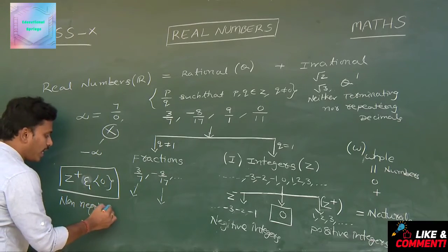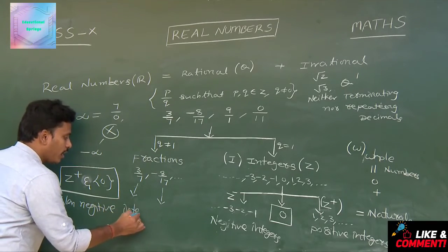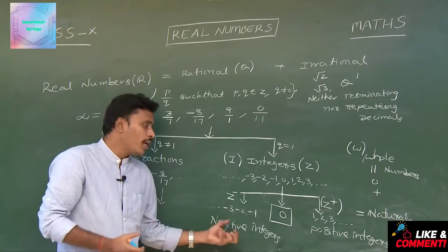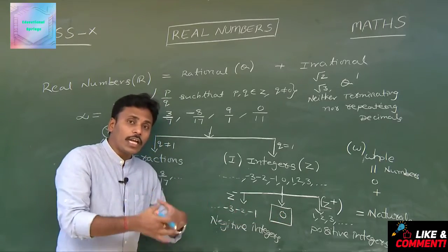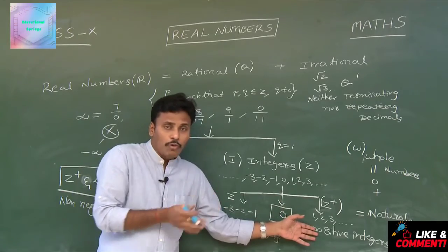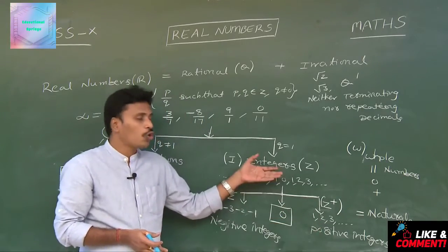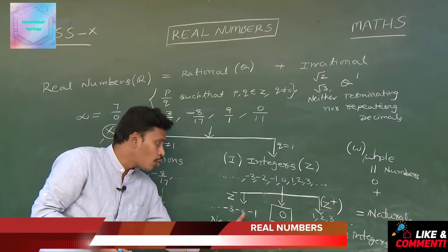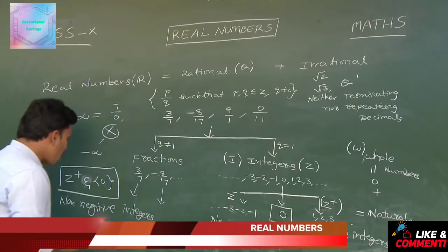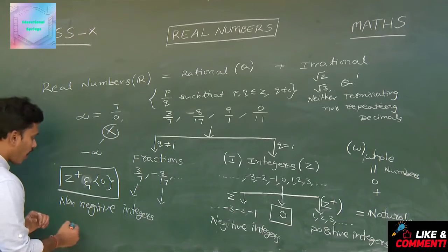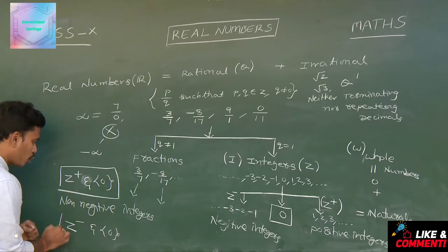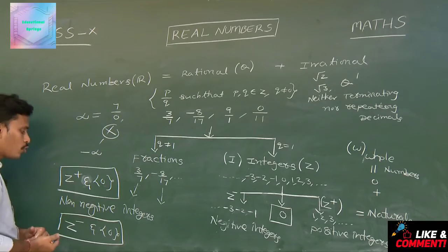Similarly, collecting negative integers along with 0 is nothing but removing positive integers from the total integers. That means the collection of negative integers along with 0 is termed as non-positive integers.